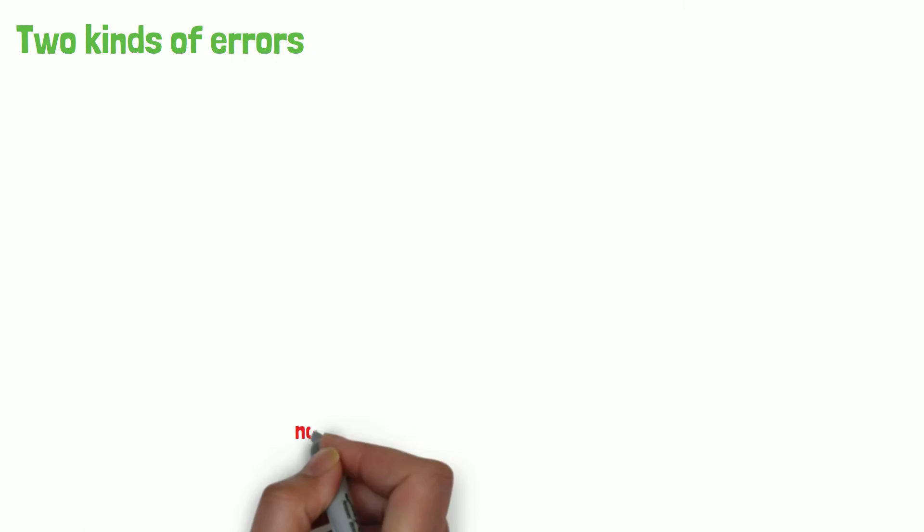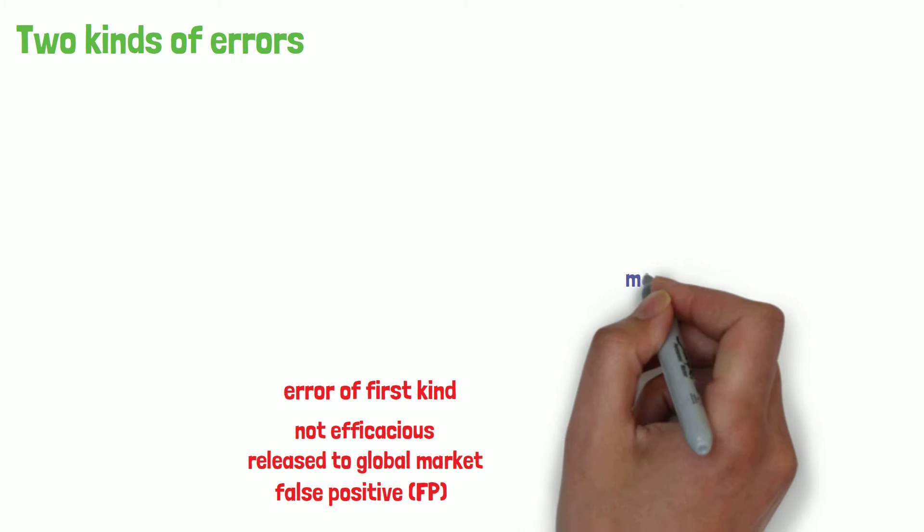There are two kinds of errors that can occur. The first being a medicament that is released to the global market, which is not efficacious. This is also called a false positive outcome or error of the first kind.